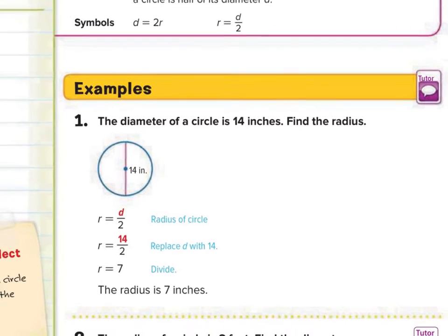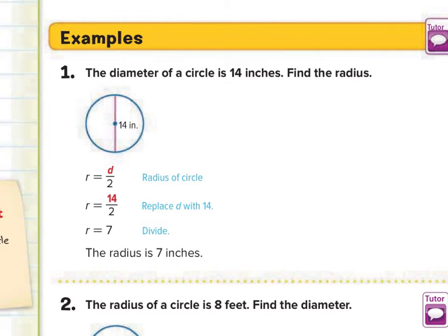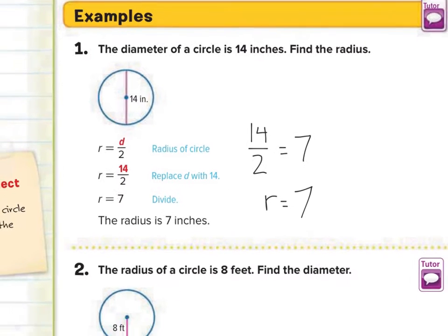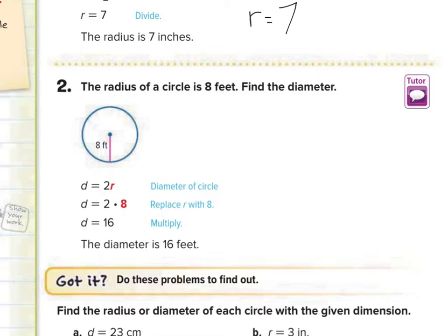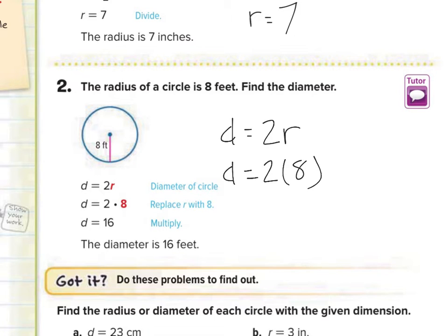Let's go through a couple of examples. In number 1, they've given us the diameter of 14, which goes all the way across. To find the radius, we take the diameter of 14 and divide by 2, which gives us a radius of 7. In example 2, they gave us the radius of 8, which only goes halfway across. To find the diameter, we multiply 2 times the radius: 2 times 8 equals 16 feet.